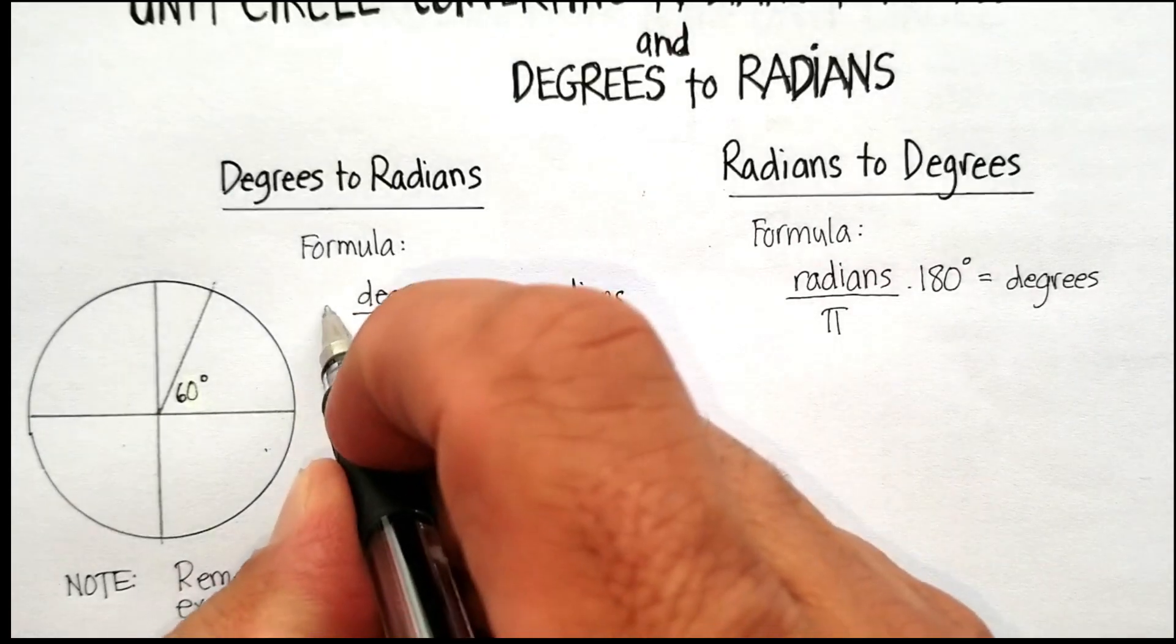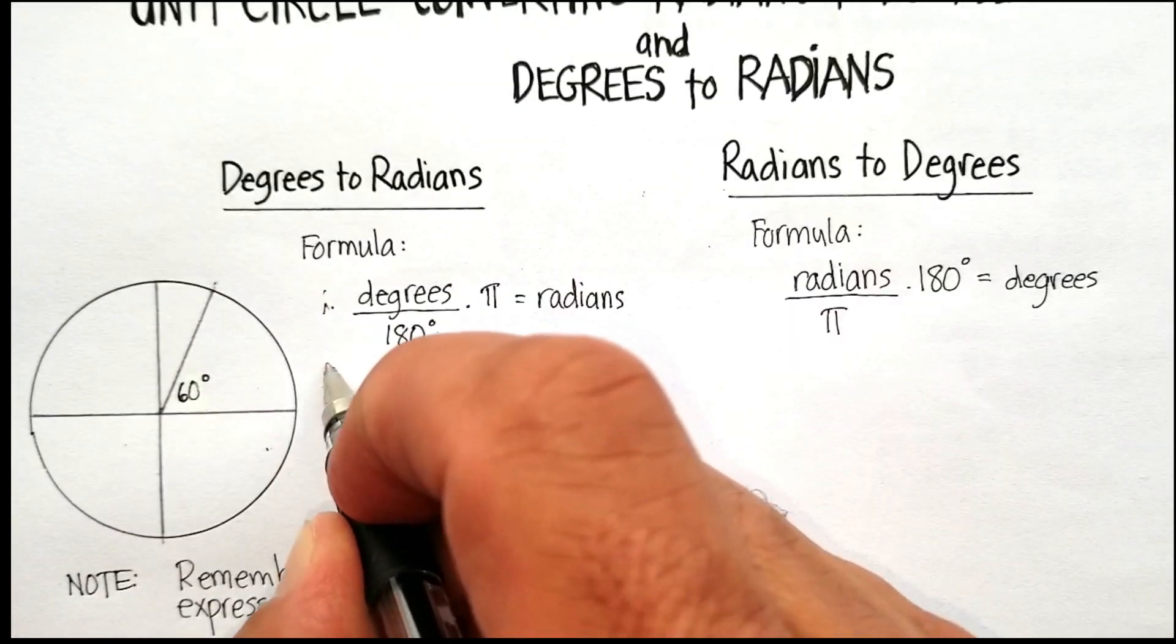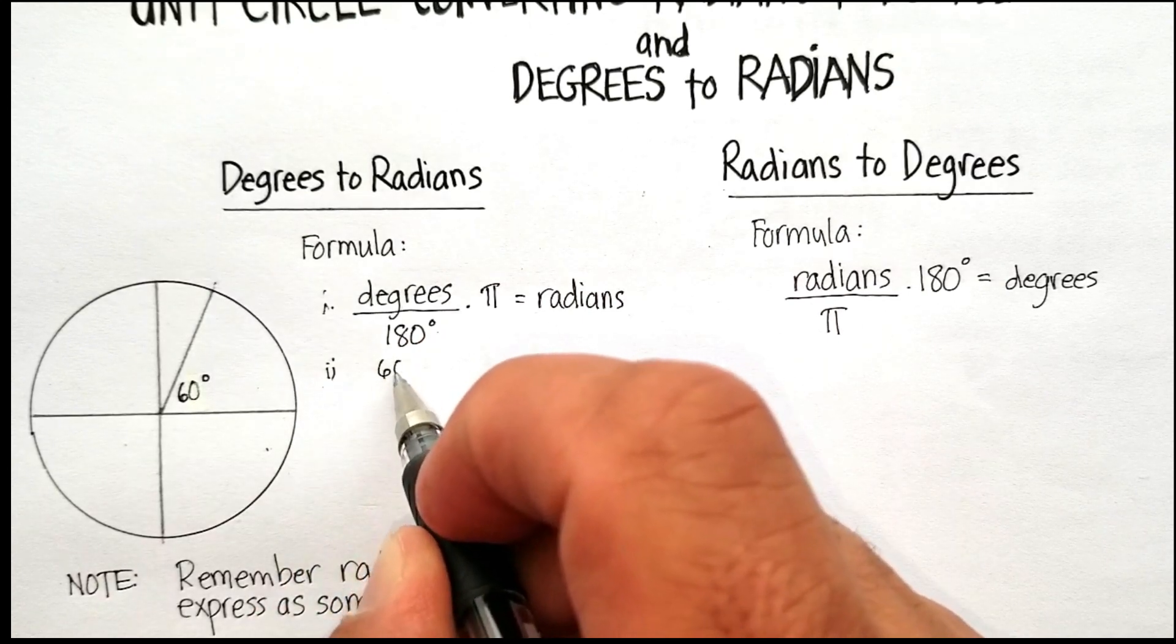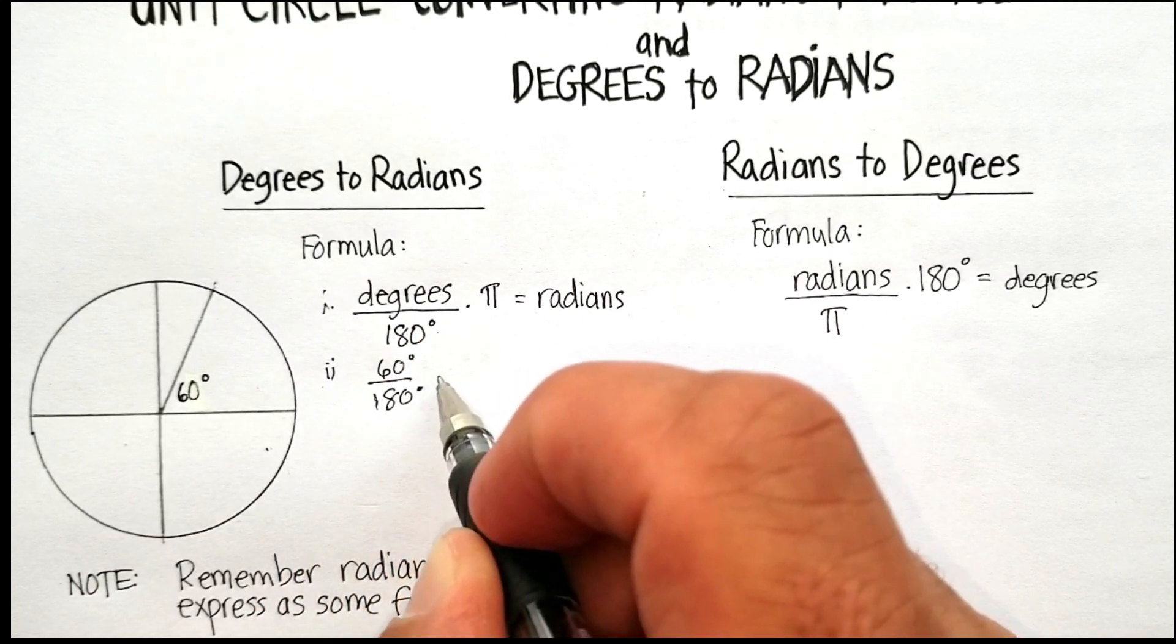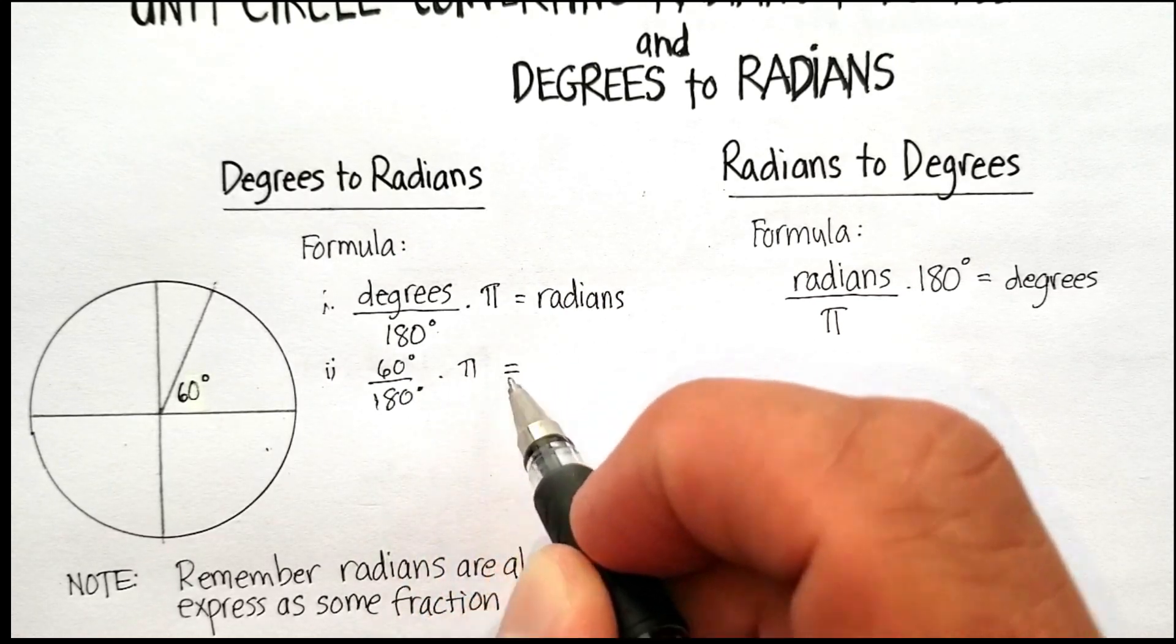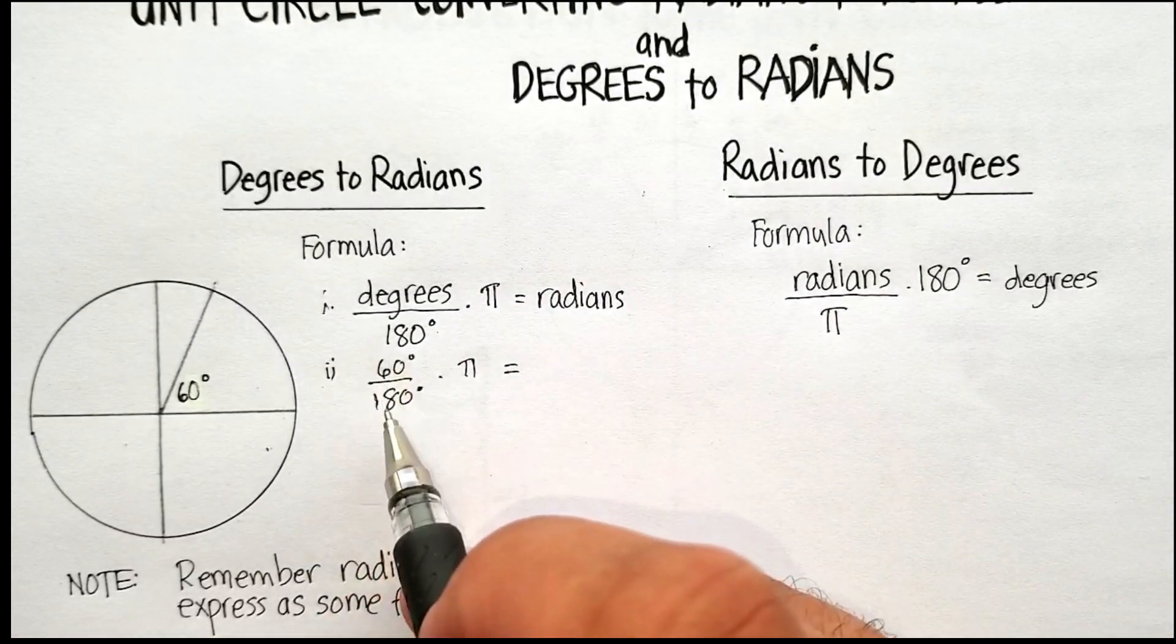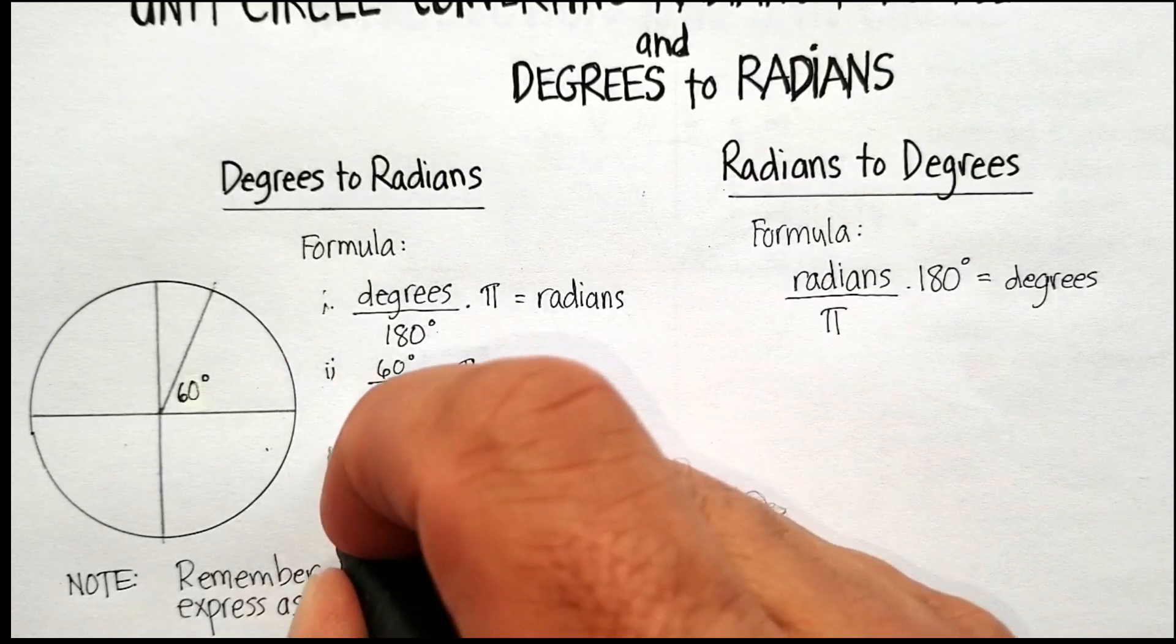Well, according to my formula, I'm going to take 60 degrees, divide it by 180, and I'm going to times it by pi, and that should be equal to my number of radians.